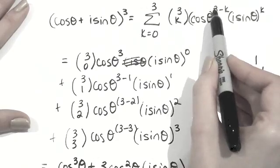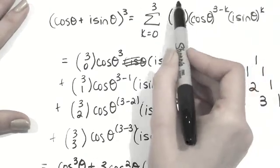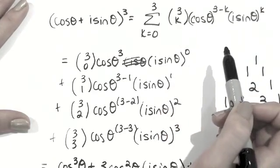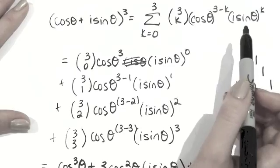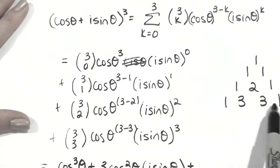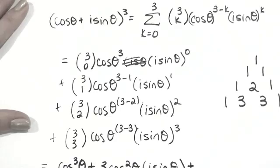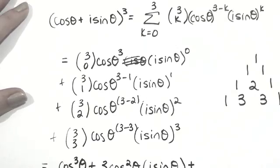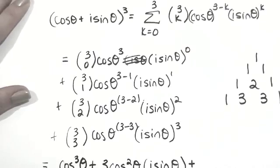So we could have had cos theta to the k, i sine theta to the 3 minus k, and kept this same 3 choose k at the front. But the order of those doesn't really matter because the coefficients are going to be the same. Play around with that because it's just kind of interesting. The more you play around with these things, the more you'll understand how it all fits together, and the more likely you are to get everything right.